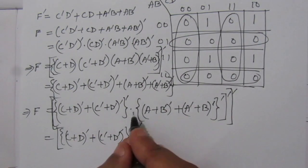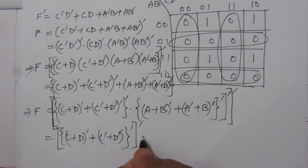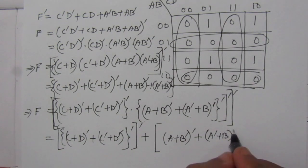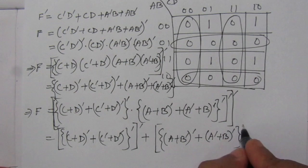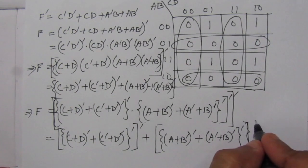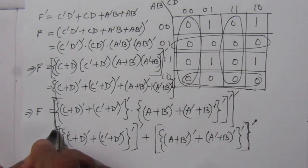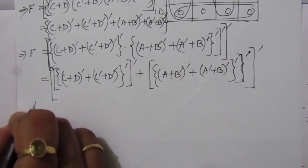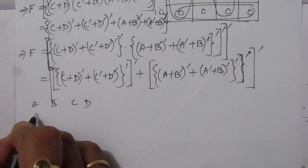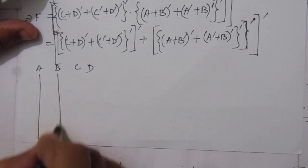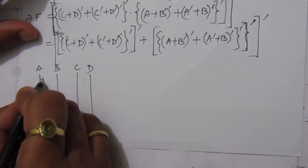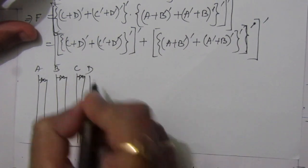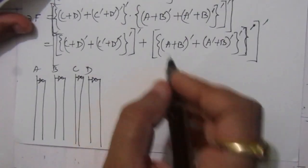Now we implement the logic circuit. We have four input lines: A, B, C, and D. We use inverters to get Ā, B̄, C̄, and D̄. Then for the NOR gate implementation, we connect C and D into a NOR gate to get (C + D)' .